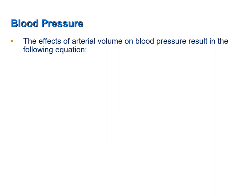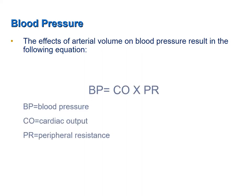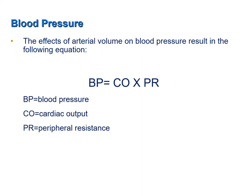The effects of arterial volume on blood pressure result in the following equation: blood pressure equals cardiac output times peripheral resistance. To understand how the autonomic nervous system maintains short-term blood pressure homeostasis, commit this equation to memory.